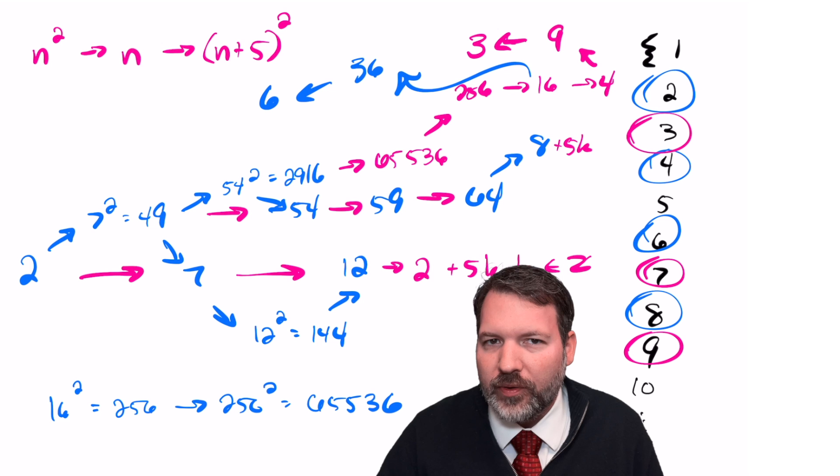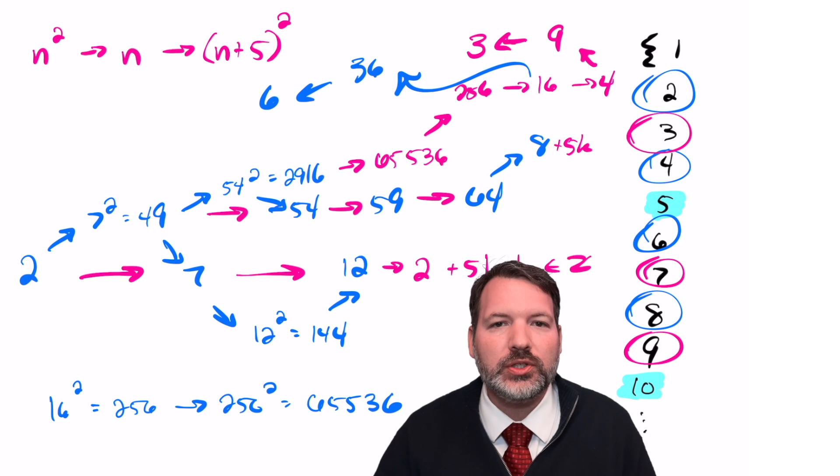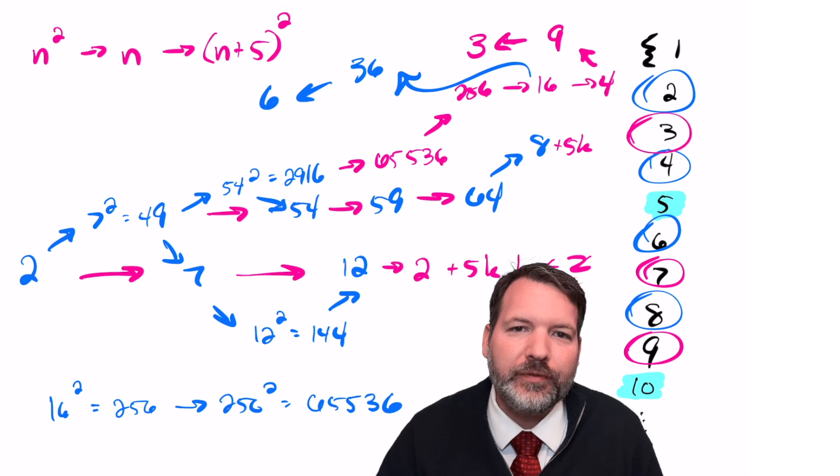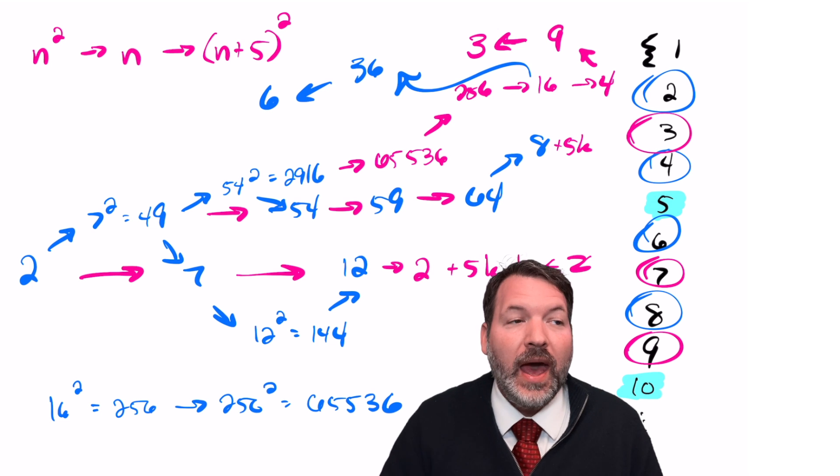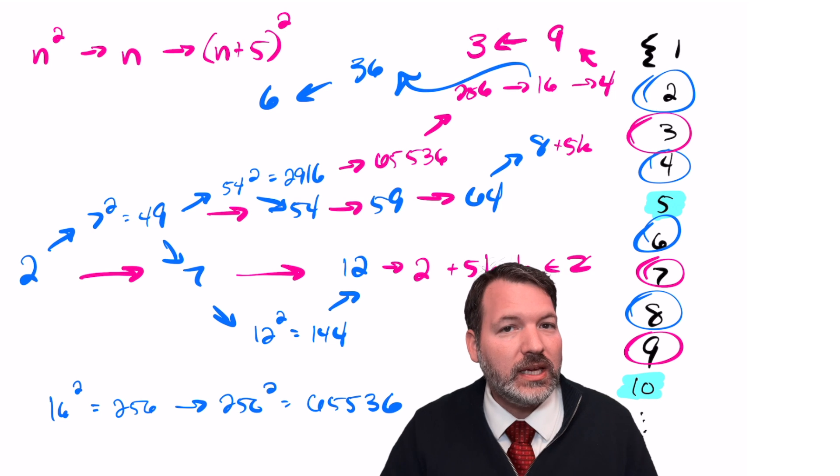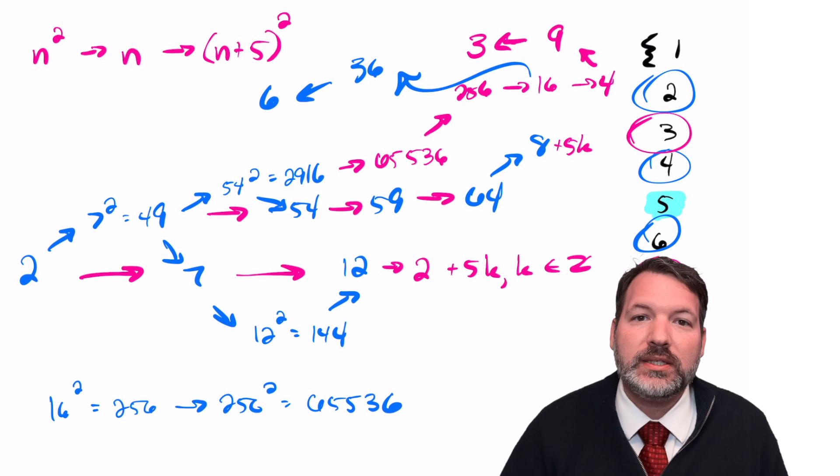But now that leaves us with kind of a puzzle. What about 5, 10, 15, 20? That is, what about the multiples of 5 themselves? Can we get those numbers into this set? Can we confirm those numbers have to be into this set? And you can see here, we end up with a problem. If we wanted 5, for example, we might say, well, is 25 going to be in the set?